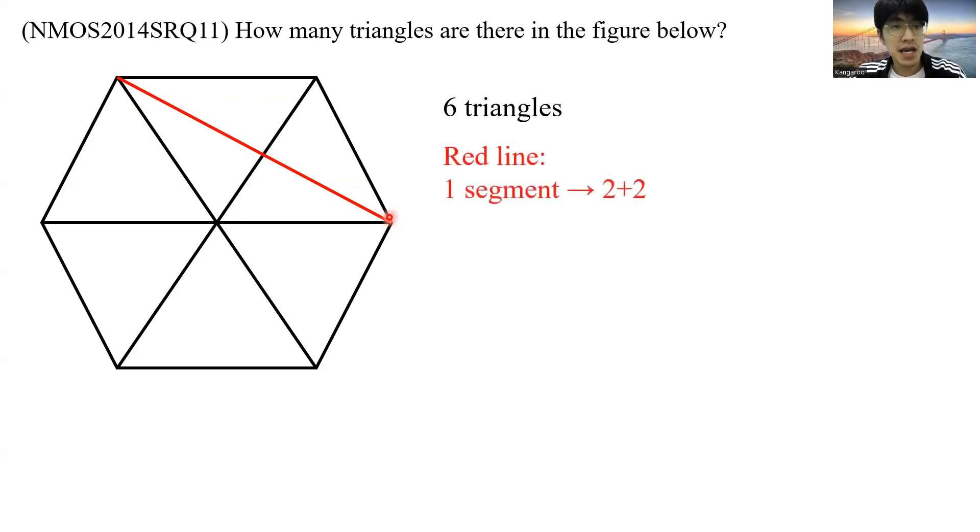So for the red line, starting with the first segment, we have one triangle over here, and one triangle over here. So that gives us two triangles. And for this second segment over here, we have one triangle over here, and another one over here. So that gives us another two triangles.